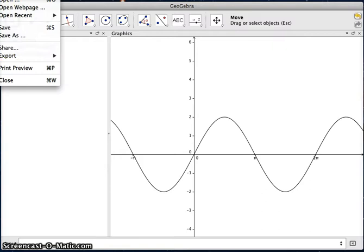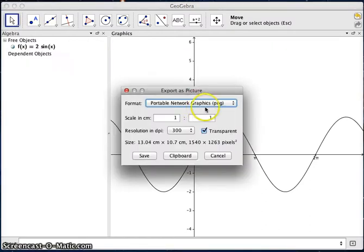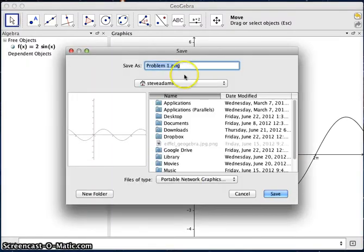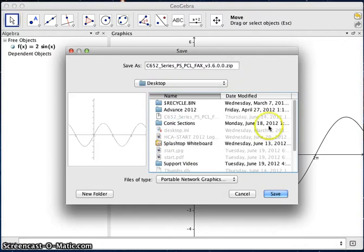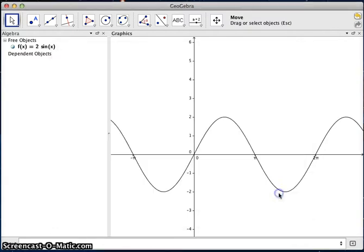So I can come back up here to the File menu, and I'm going to export it as a picture. And this time I'm going to call it Problem 2. It's still going to be going into the Desktop folder and the Trig Functions folder. And now I've created a second image.